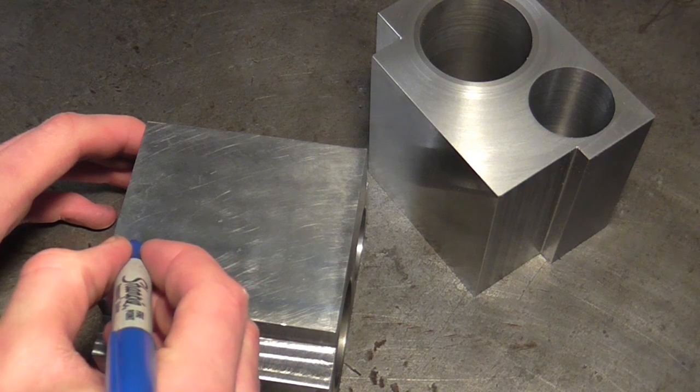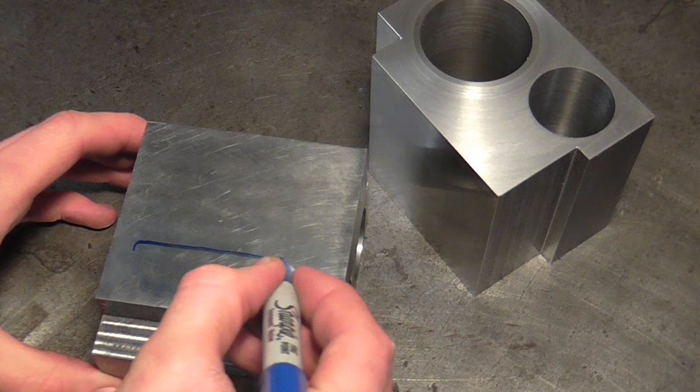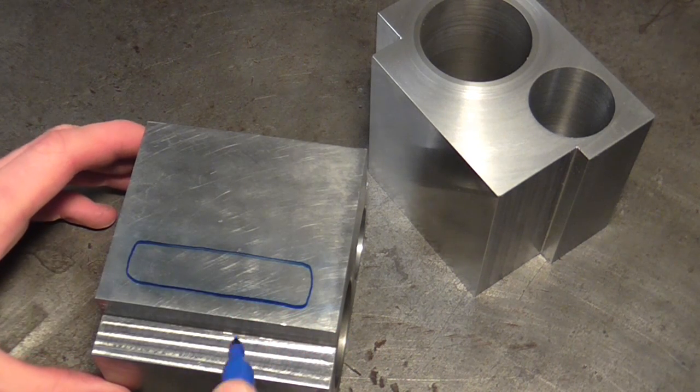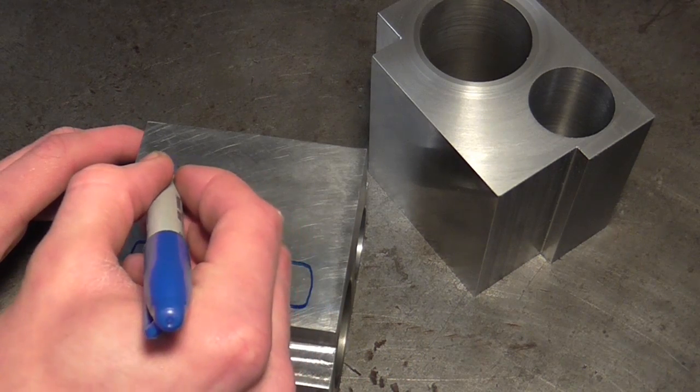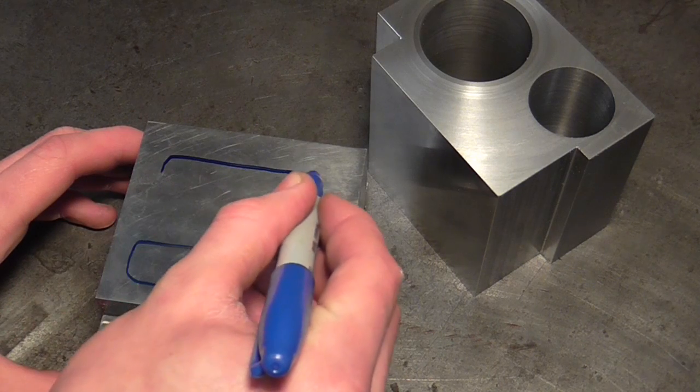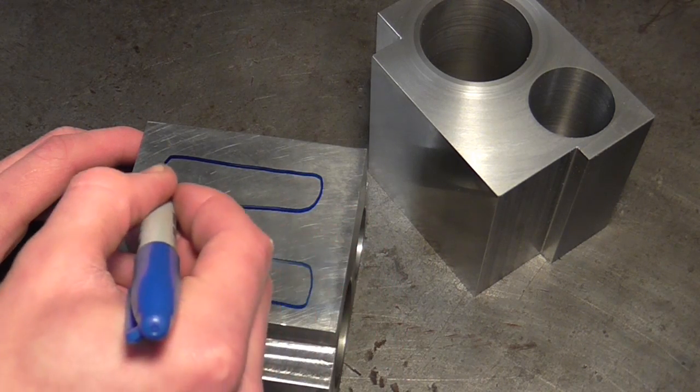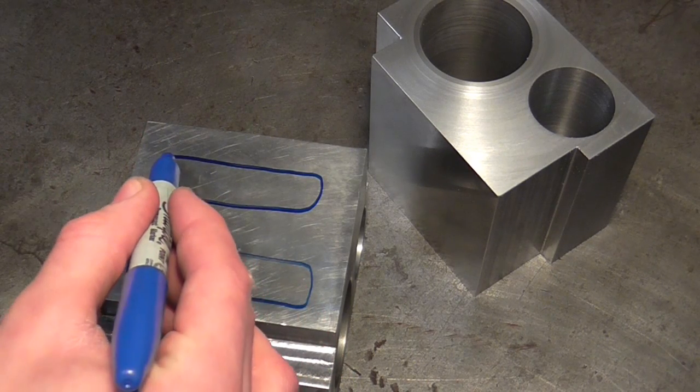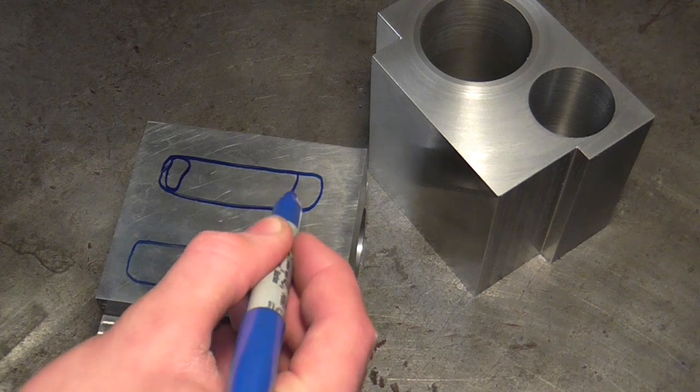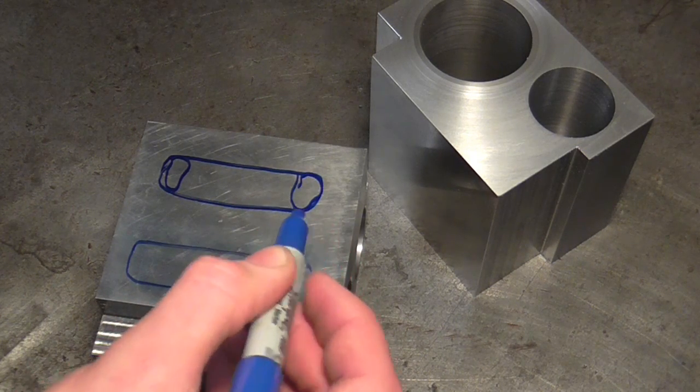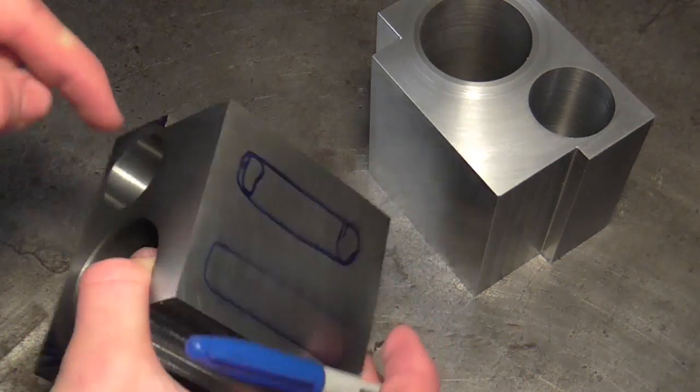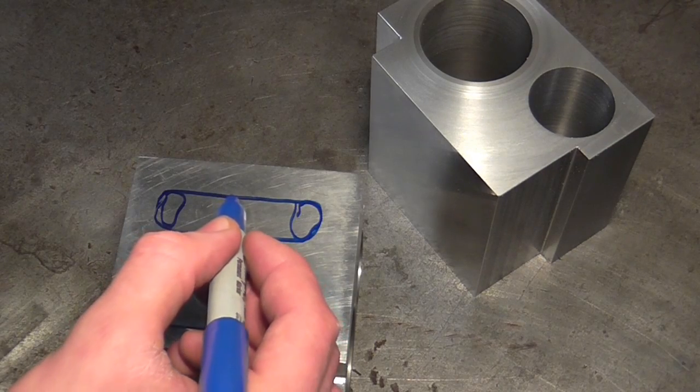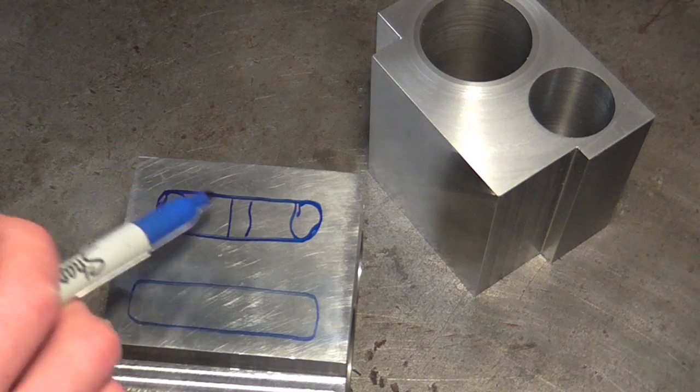One fairly straightforward pocket at the bottom and one pocket above it which is a little more complicated. Similar shape but different depths, and you'll see when I come to mill it that I've got two extreme edges of the pocket that go right through and break into this bore.